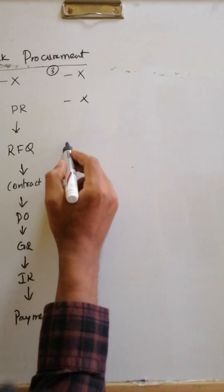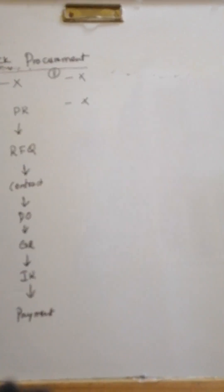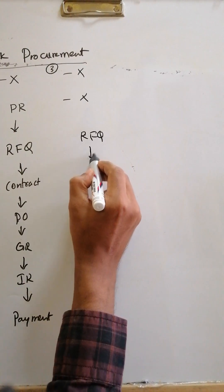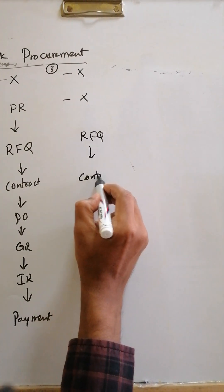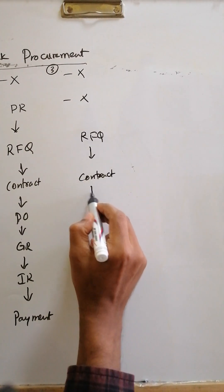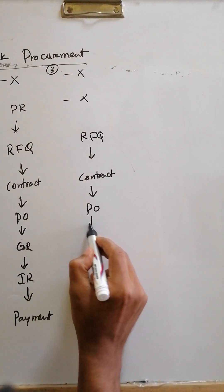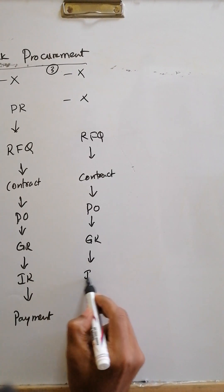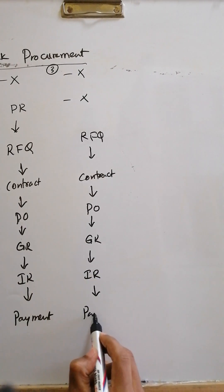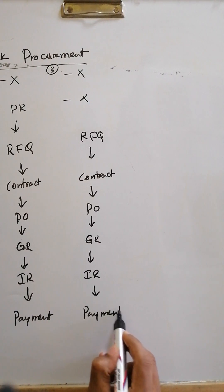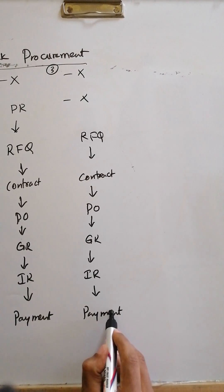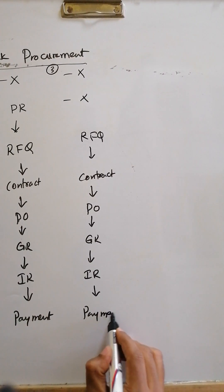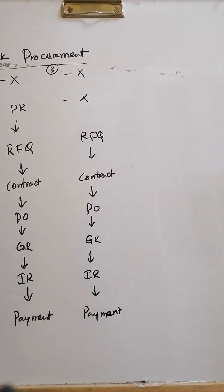Case 3: Some companies don't use MRP and don't use PR either. They directly create an RFQ based on the required quantity or value. From the RFQ they proceed to contract, then PO, GR, IR, and payment. So you are starting to understand what is mandatory and what is optional in stock procurement.